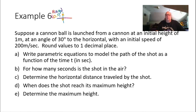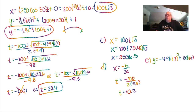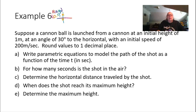For part E, what is the maximum height? We plug t equals 10.2 into the y equation: y equals negative 4.9 times 10.2 squared plus 100 times 10.2 plus 1. Putting that in the calculator gives approximately 511.2 meters.